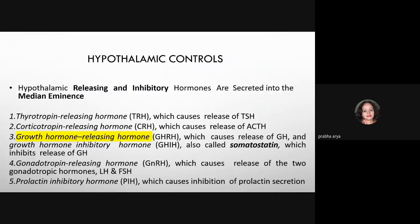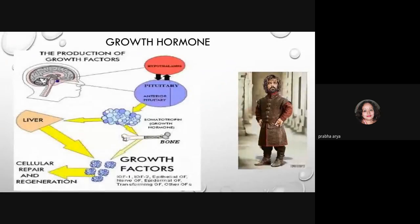Pituitary secretion is controlled by hypothalamic factors. The hypothalamus releases both releasing and inhibitory hormones — specifically, growth hormone releasing hormone (GHRH), which stimulates growth hormone release, and growth hormone inhibitory hormone (somatostatin), which inhibits it. Growth hormone in turn stimulates different cells to release growth factors: the liver releases insulin-like growth factor 1 and IGF-2, and other cells secrete epidermal growth factor, nerve growth factor, epithelial growth factor, transforming growth factor, and platelet-derived growth factor.